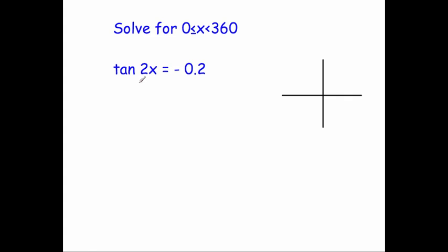In this question we've been asked to solve tan 2x equals negative 0.2, where x is between 0 and 360 degrees.